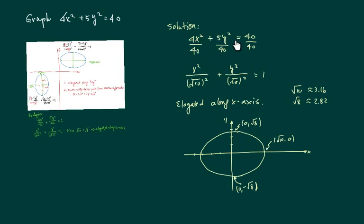All right, so here's the solution. Normalizing into one, you have the square root of 10 under the x term. So it's going to be elongated along x-axis. Radical 10, square root of 10 is roughly 3.16. It's slightly over 3. And the other one is slightly under 3. So here's the graph.